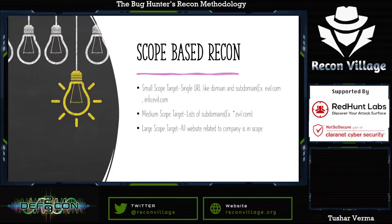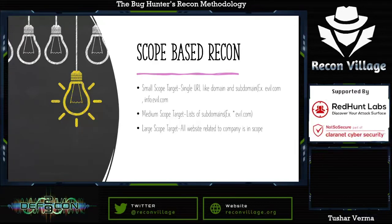Scope-based recon methodology is the best approach. First, it saves a lot of time because for a particular scope you test only the relevant things without mixing everything up. Second, the chances of getting a duplicate or out-of-scope bug are very low. Third, you can automate your recon workflow because you know whether your scope is small, medium, or large.